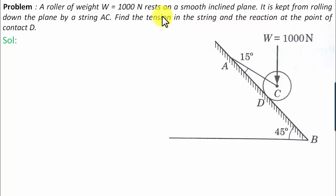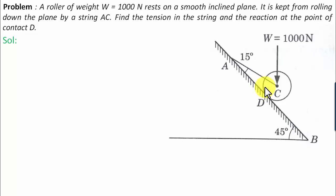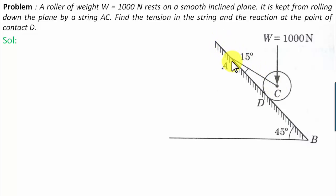Let me explain the entire arrangement. There is a roller C, and the roller has a tendency to roll down. To make sure it does not roll down, we have a string AC. One end of the string AC is attached at the center of the roller while the other end is attached at A to the smooth inclined plane.